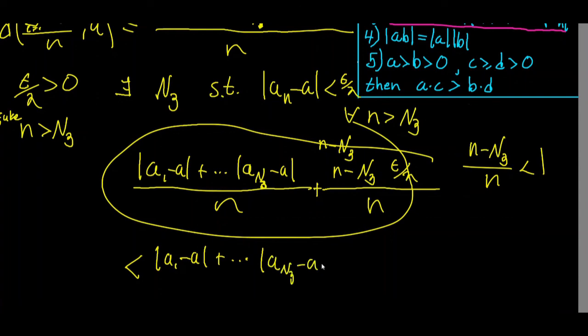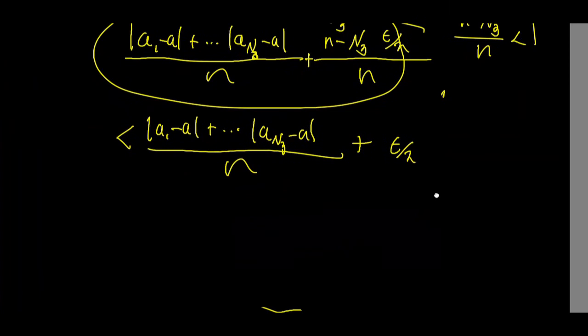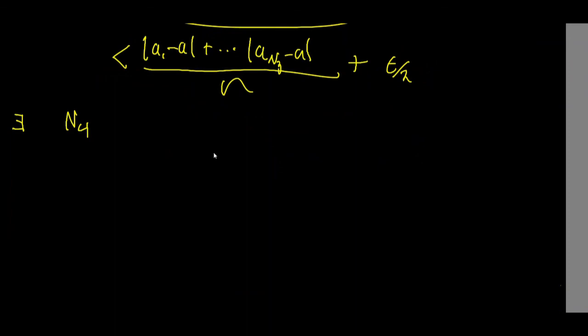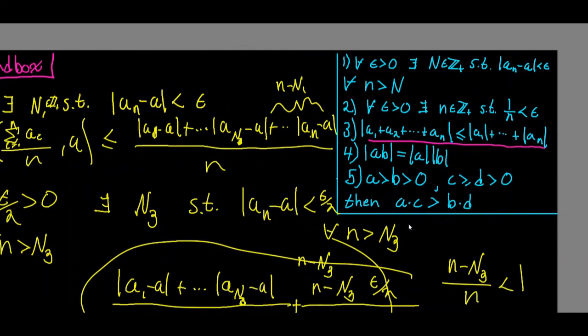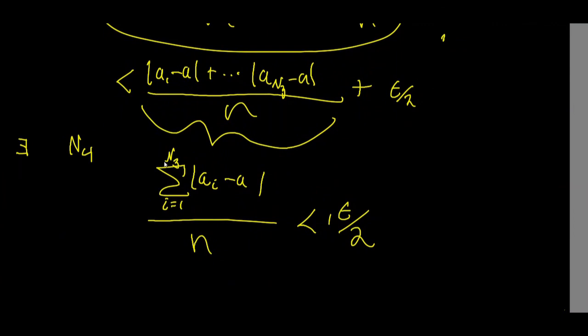By the same reasoning as before — since epsilon over 2 is just another positive number — there exists an N₄ such that the sum from i equals 1 to N₃ of absolute value of aᵢ minus a, all over N₄, is strictly less than epsilon over 2. For all n strictly greater than N₄, the sum from i equals 1 to N₃ of absolute value of aᵢ minus a, all over n, is strictly less than epsilon over 2. We're almost done.